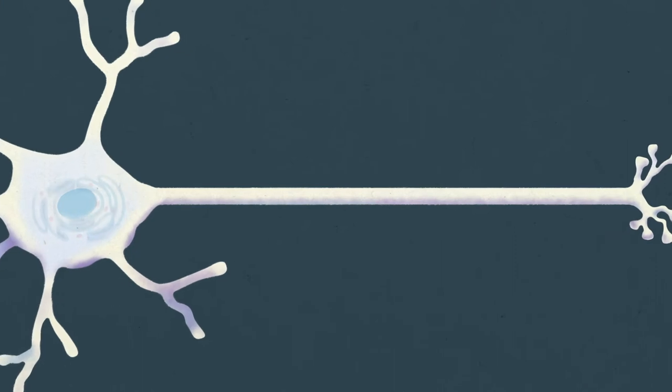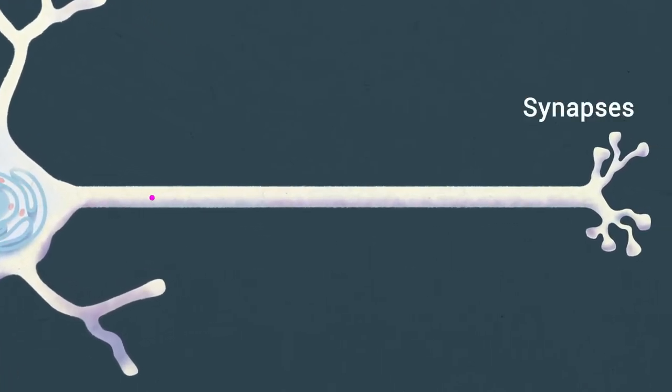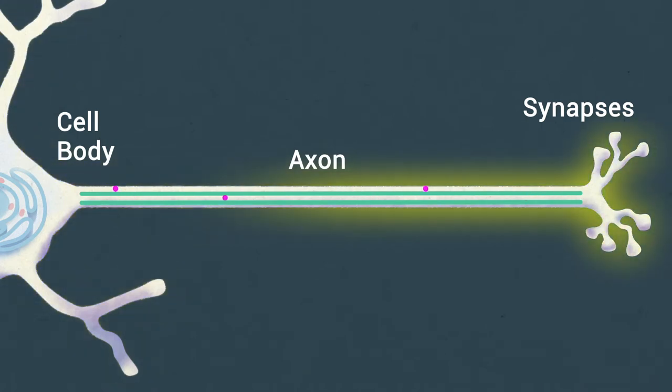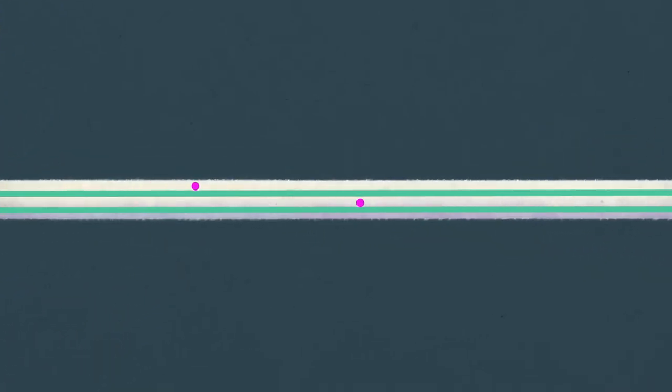To be able to make and maintain synapses, neurons transport materials from the cell body along axons to the site where synapses form. Protein filaments called microtubules play an important role in this trafficking.